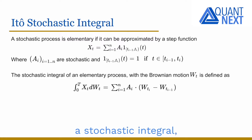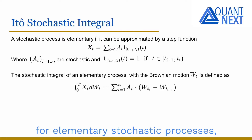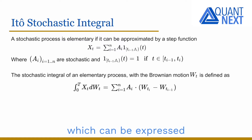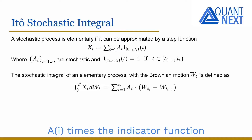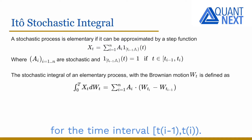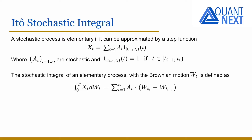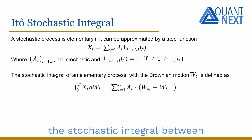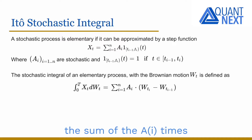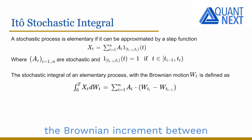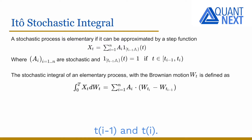In order to define a stochastic integral, we first define it for elementary stochastic processes, which can be expressed as the sum of stochastic variables a_i times the indicator function for the time interval (t_{i-1}, t_i). For such processes, the stochastic integral between 0 and t of x_t dW_t is equal to the sum of the a_i times the Brownian increment between t_{i-1} and t_i.